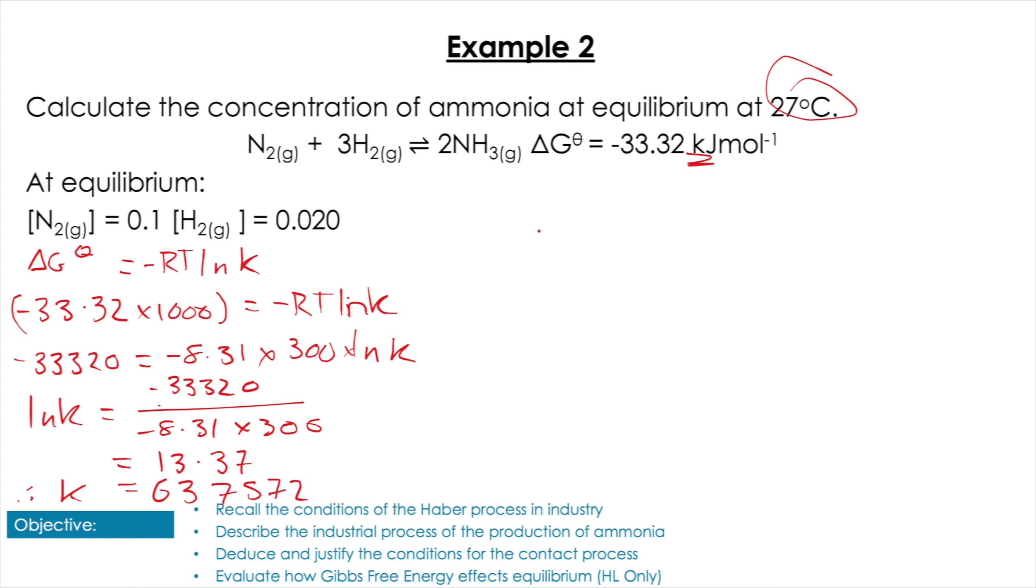That's not the end of the question though, because it asks us to calculate the concentration of ammonia. So I'm going to write out my equilibrium expression and I'm going to plug in the values that they've given me in the question. So my equilibrium expression from the equation is [NH3]² / ([N2] × [H2]³). Plug in the values they give us: the value for N2 is 0.1, and H2 is 0.02.